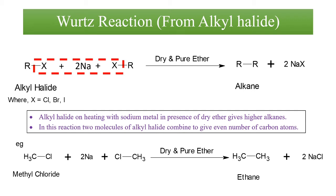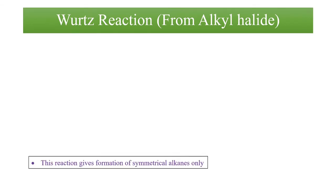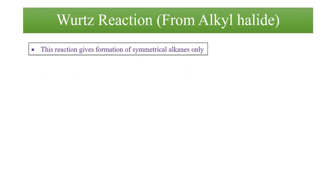Now when I talk about the alkyl group, the minimum number of carbon atoms present is one. Now if these two alkyl groups will combine, definitely the minimum alkane we can get is ethane. Hence, this reaction is not suitable for the preparation of methane. This reaction will always give us the formation of symmetrical alkanes.